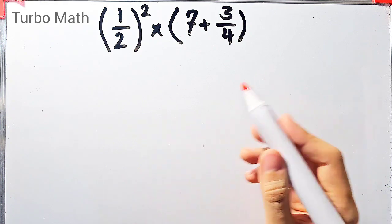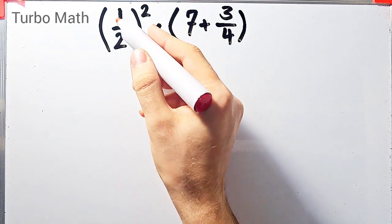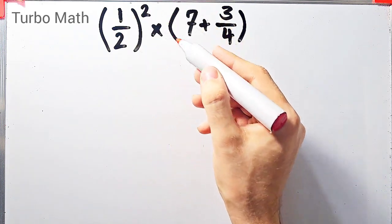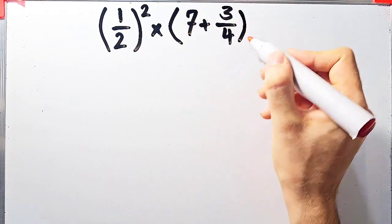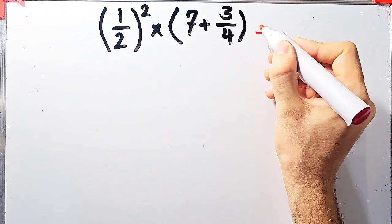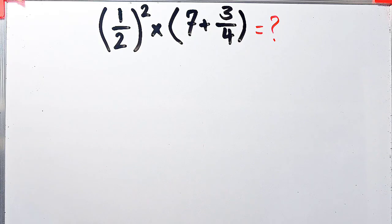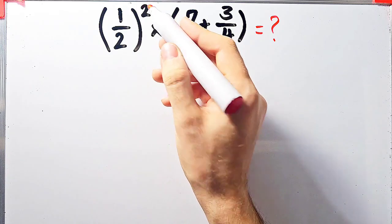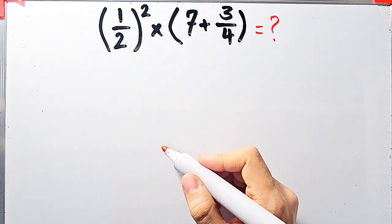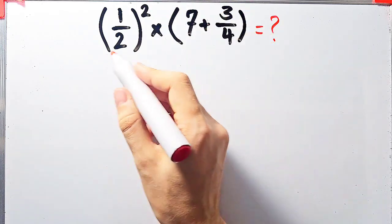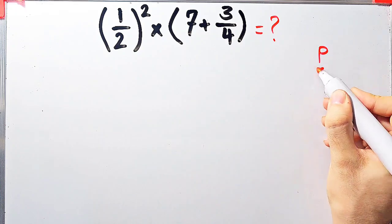In the first question we have one over two, all of them to the power of two, then times open parenthesis seven plus three over four close parenthesis. In this question we have exponent, multiplication, parentheses, and addition. To solve this question we need to follow the order of operations, which is PEMDAS.